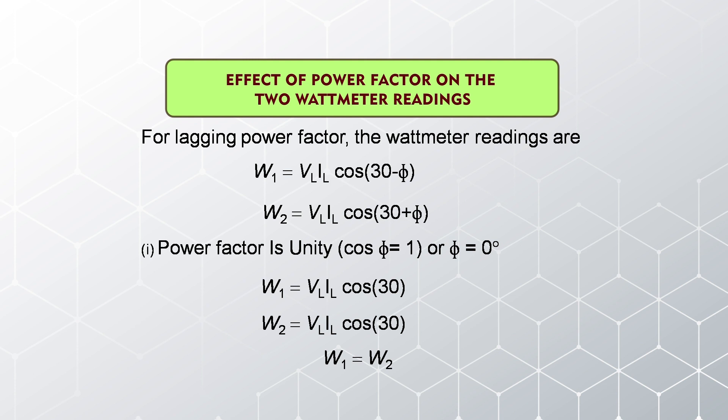Putting φ equal to 0 in the readings: W1 equals V_L·I_L·cos30, and W2 equals V_L·I_L·cos30. Both wattmeter readings are the same, meaning the power measured by wattmeter 1 equals the power measured by wattmeter 2. This is the condition when the power factor is unity, or for a resistive load.